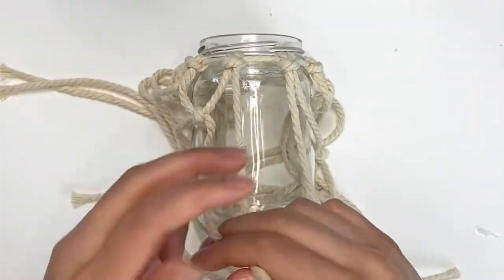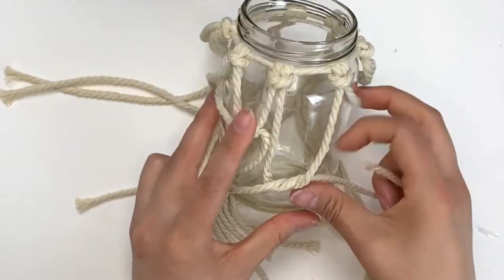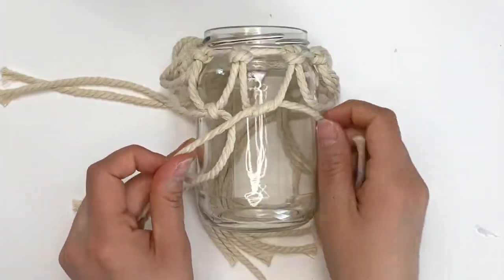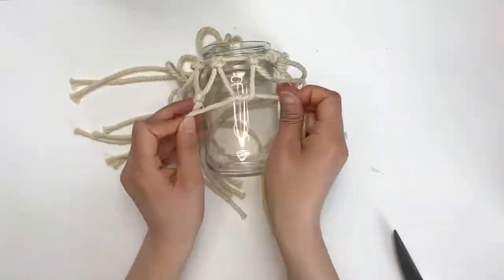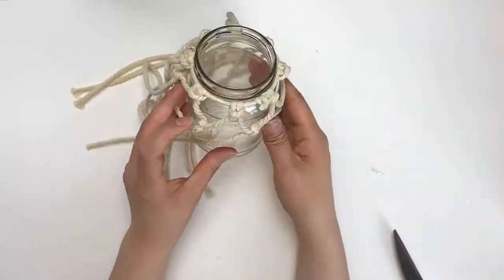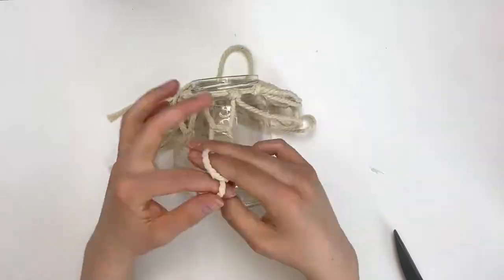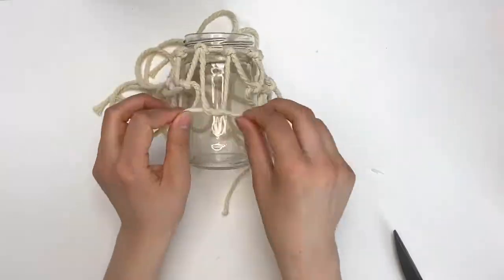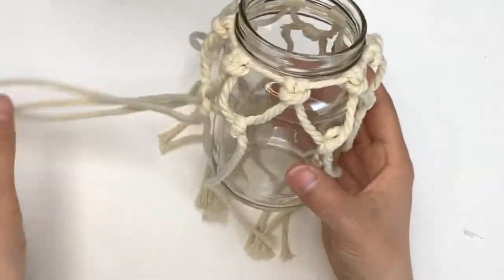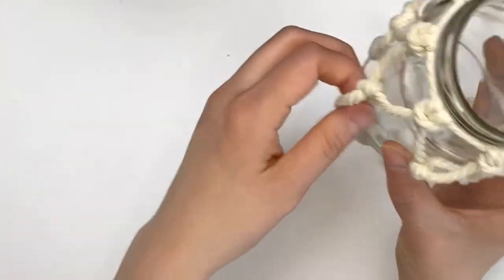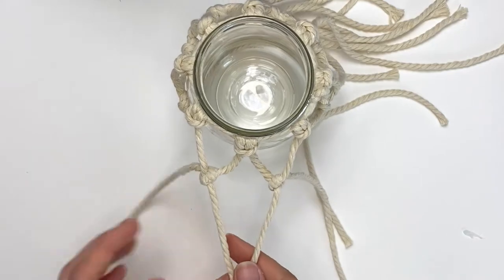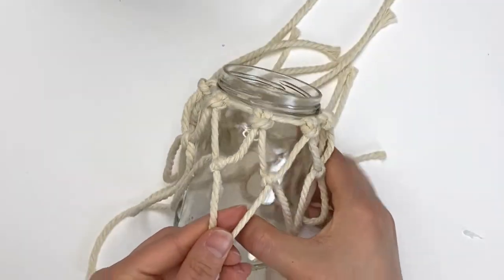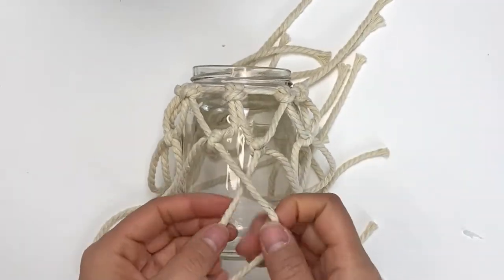Then continue by grabbing the next two strands of macrame and doing the same thing, making two knots. And then continue around your jar the exact same way until you are back where you started.